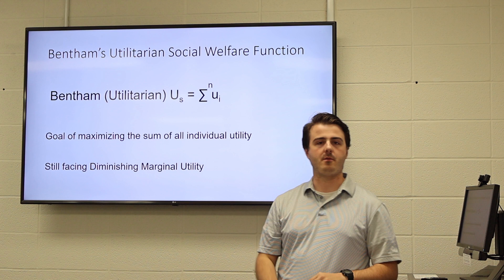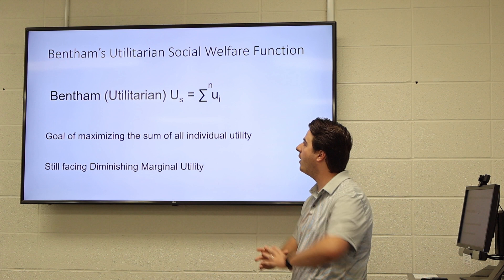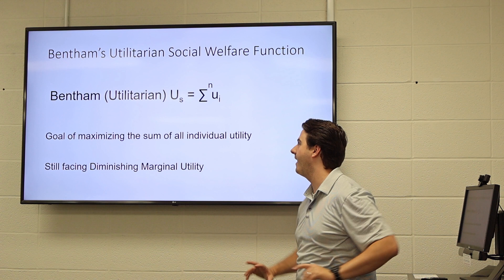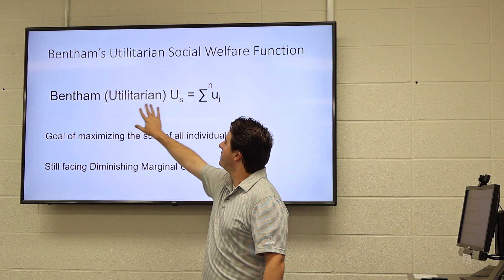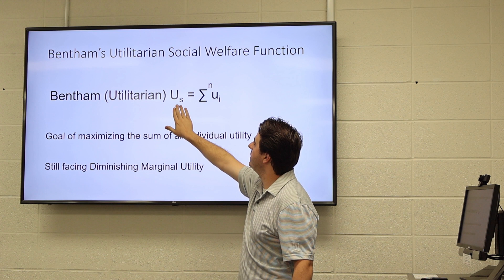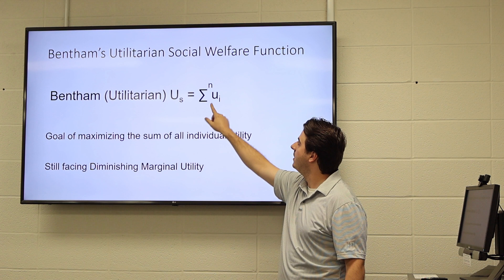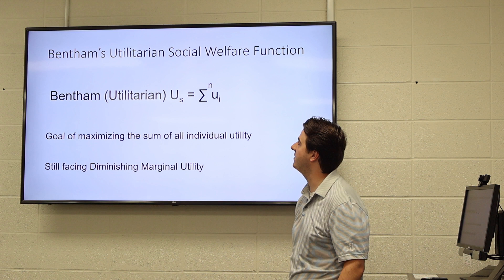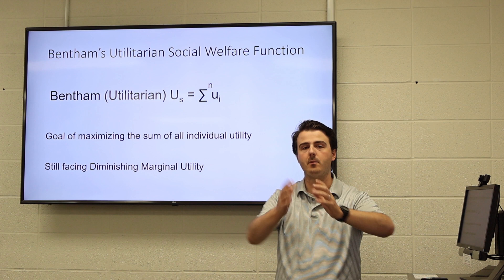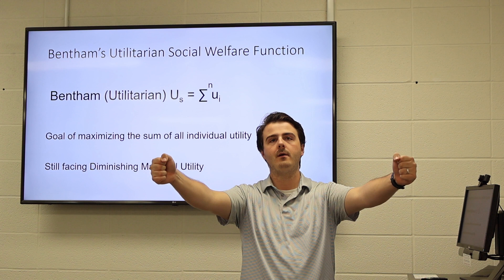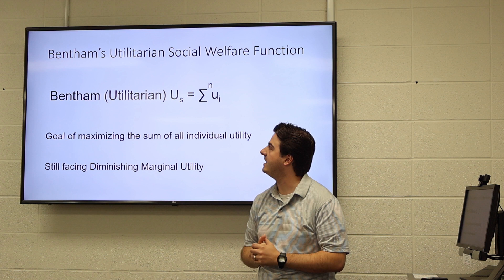First, we're going to look at Jeremy Bentham — our utilitarian measure of social welfare. We've got a little bit of math on the board. So this is our utilitarian social welfare function. The total utility of a society is equal to the sum of individual utility for however many people exist in your society. We add up all of the net utility — remember this idea of pleasure minus pain — we add up everybody's utility, and that total number represents our society's utility.